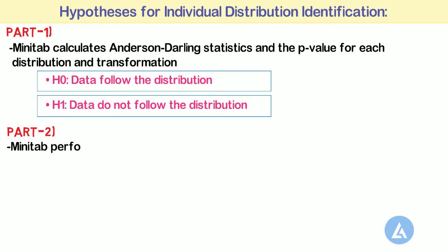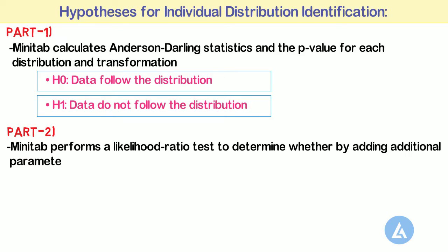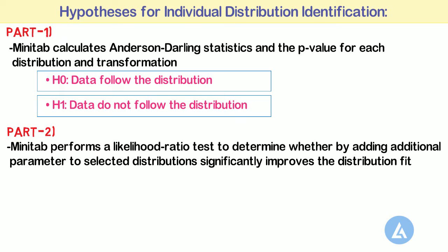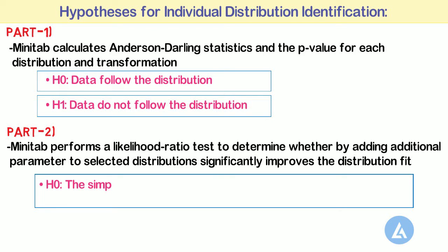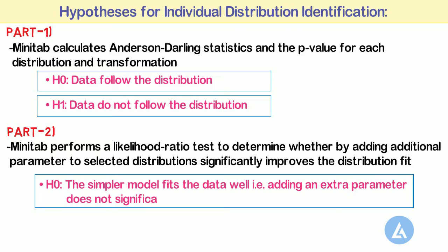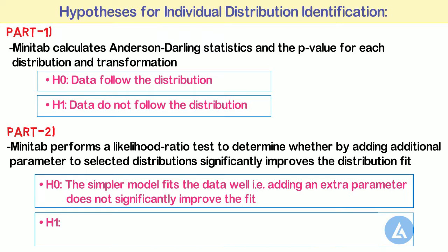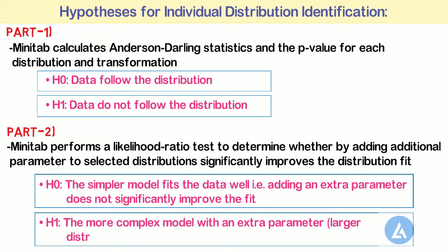Part 2: Minitab performs a likelihood ratio test to determine whether adding an additional parameter to the selected distribution significantly improves the distribution fit. For the likelihood ratio test, the hypotheses are as follows — H0: the simpler model, i.e. smaller distribution family, fits the data well; and H1: the more complex model, with an extra parameter, i.e. larger distribution family, significantly improves the fit of the data.